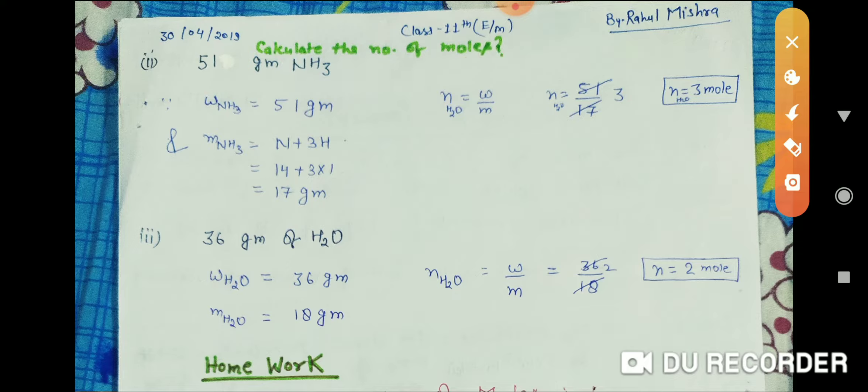The given mass of NH3 is represented by W(NH3) and it is 51 grams. We all know that the molecular mass of NH3 is represented by small m, so m(NH3) is equal to the atomic mass...